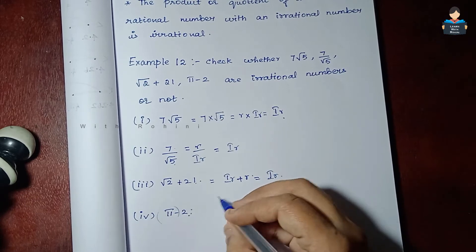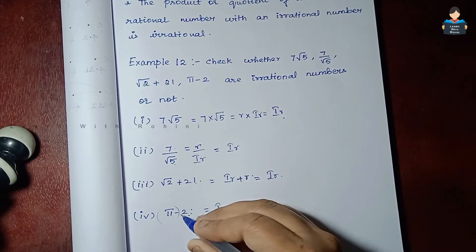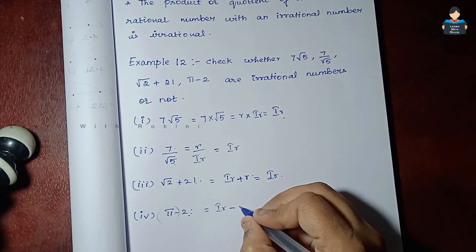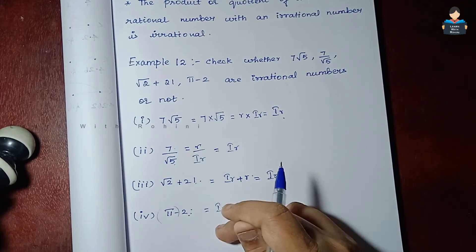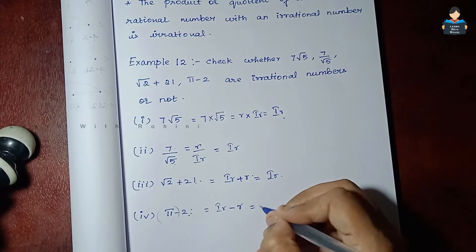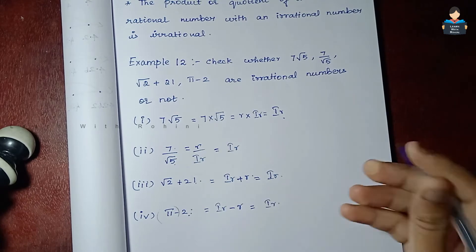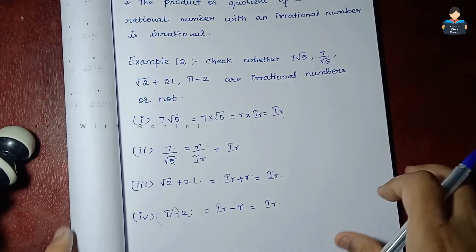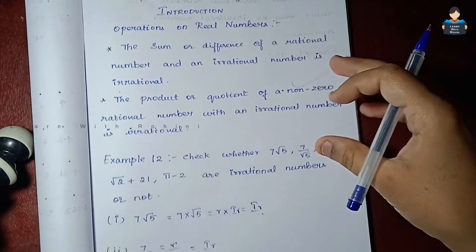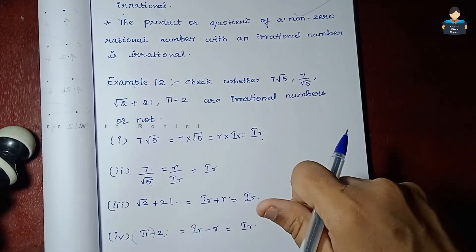√5 is an irrational number and 2 is rational. When a rational and irrational are separated, we can say the answer is irrational. So using both statements, we can confirm for Example 12.